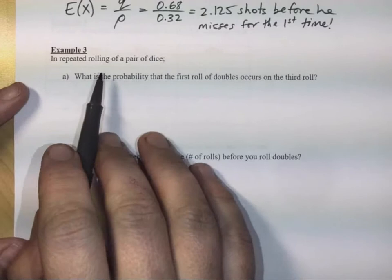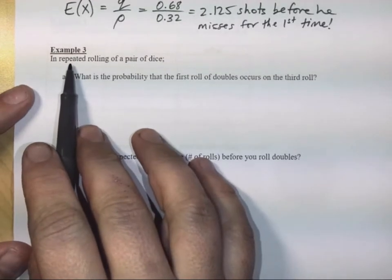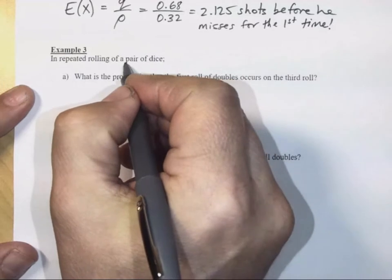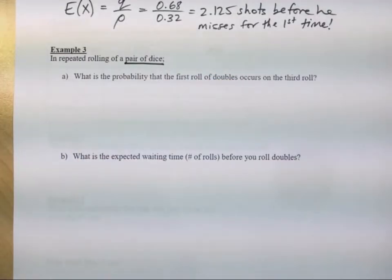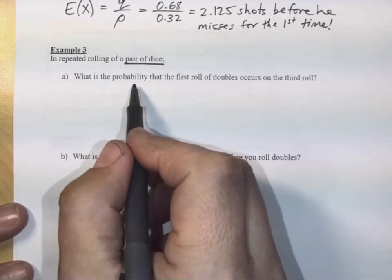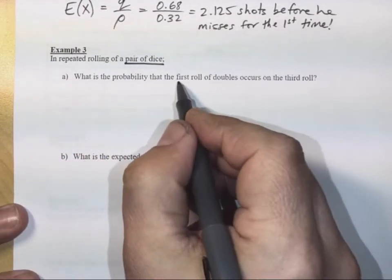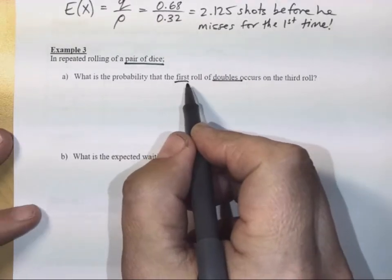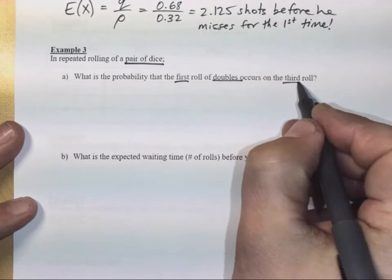So we're on to example 3 now, and it looks like in example 3 we're repeatedly rolling a pair of dice, and a pair of dice means we're going to get a sum. If we repeatedly roll a pair of dice, what is the probability that the first roll of doubles, not just any roll of doubles, the first roll of doubles occurs on the third roll.